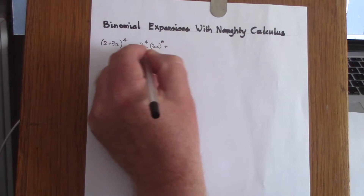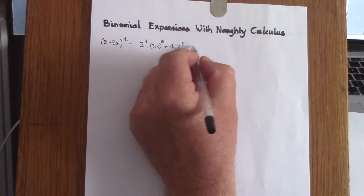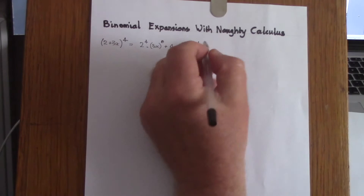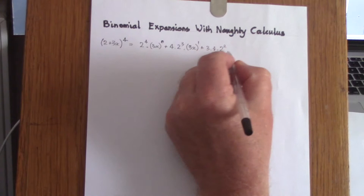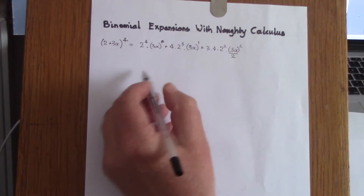Differentiating gives 4 times 2 to the power of 3, and then we integrate the second term — treating that as an integrable entity — giving 3x to the power of 1 over 1. We then continue in the same manner: differentiating this gives 3 times 4 times 2 to the power of 2, and integrating gives 3x to the power of 2 over 2.